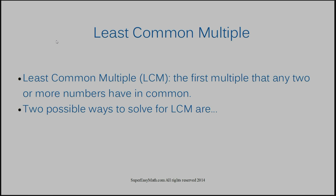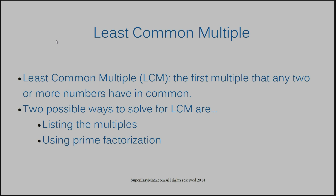Two possible ways to solve for least common multiple are by listing the multiples, and also by using prime factorization. Here's example number one — we have seven and five. I'll show you how to solve for least common multiple by using the method of listing your multiples first.